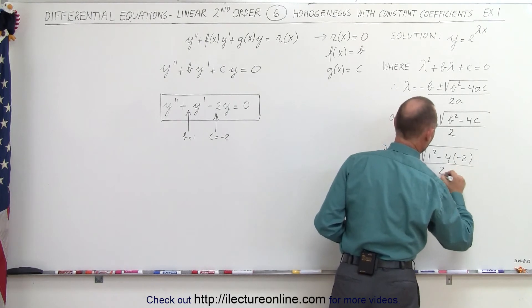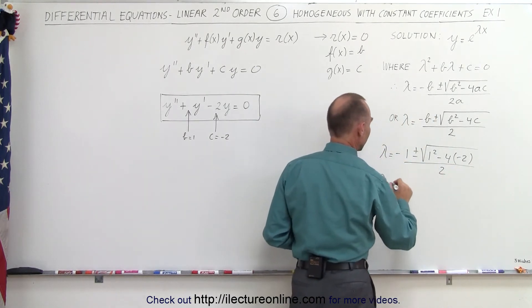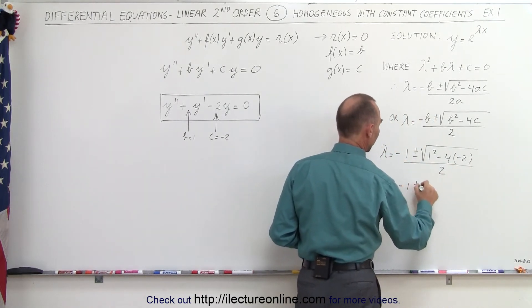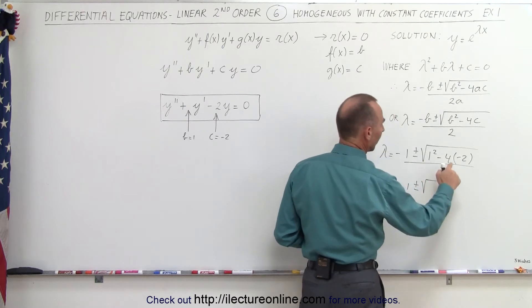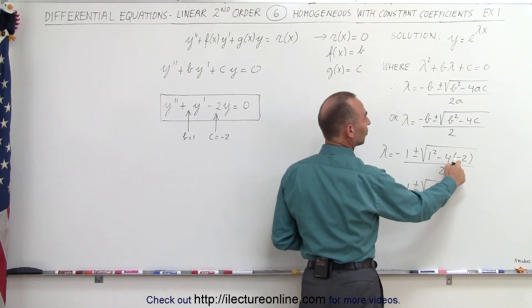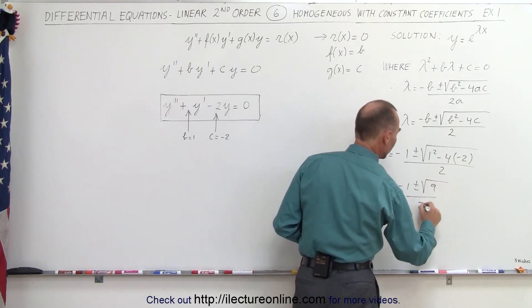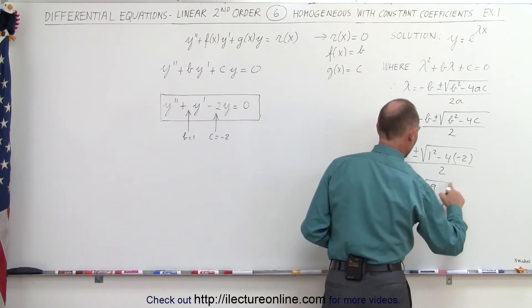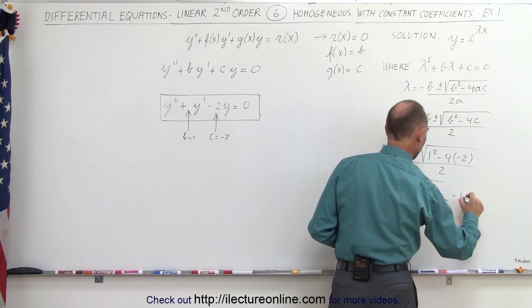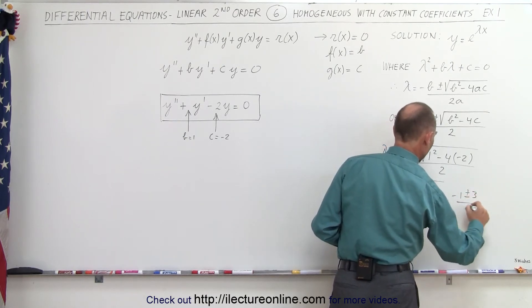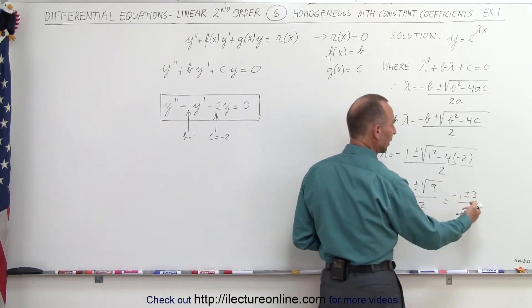Take the whole thing and divide it by 2. So we have lambda equals negative 1, plus or minus the square root of minus 4 times minus 2 is plus 8, plus 1 is 9, divided by 2, and so this can be solved. This equals minus 1, plus or minus 3, divided by 2. And finally, we can take both options.